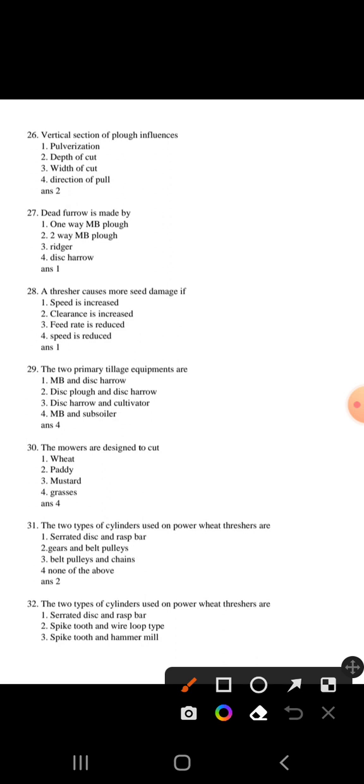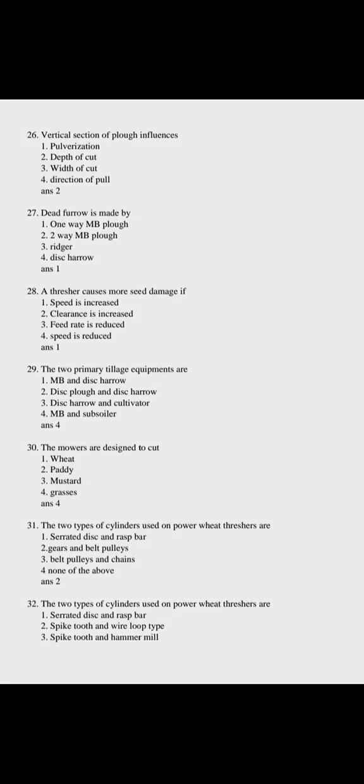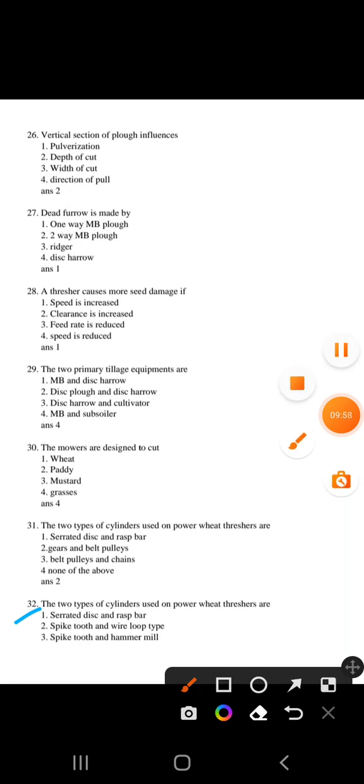Question 31: Two types of cultivators used on current operations are gear and belt pulley types. Question 32: Two types of cylinder used on power thresher are - the answer is third option correct: rasp tooth and hammer type, not respect to disc or rasp bar. First option will be correct.